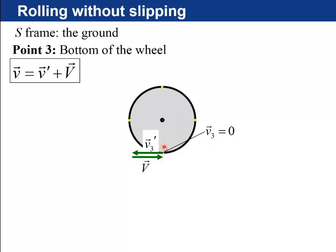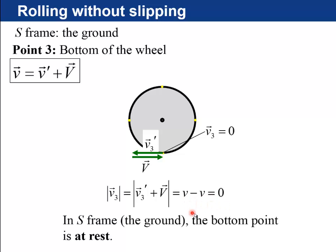Point three, at the bottom of the wheel, what you've got is the rotational velocity component going to the right, and the axle component going to the left, and those cancel out. v minus v is zero. So in the S frame, the ground, the bottom point is at rest.